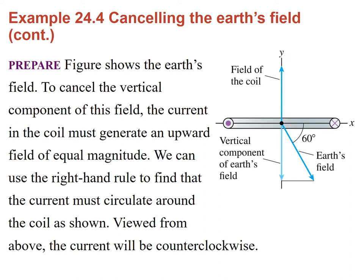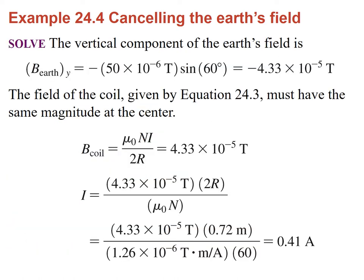We need to calculate this. The Earth's field is 5 times 10 to the negative 5 Teslas, so we calculate its vertical component: 5 times 10 to the negative 5 times sine of 60. The minus sign indicates the field is pointing down. We equate the magnitude of this to the field of the coil — given by the number of turns, the current, and the radius — and solve for the current. The radius is 72 centimeters, μ₀ is the permeability constant, and N is 60 turns. Calculating this gives approximately 0.41 amps.